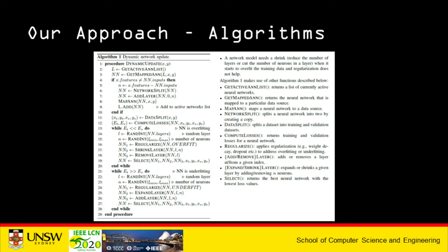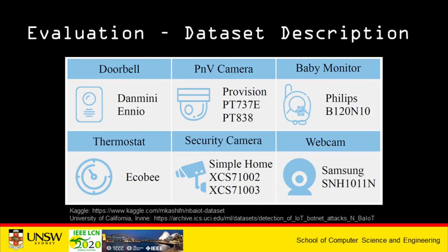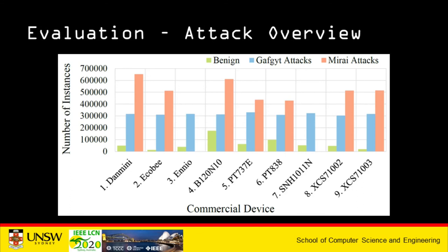We made use of a public dataset downloaded from the University of California Irvine's machine learning repository. We also reformatted the dataset so it can be more useful, and placed it on a public platform called Kaggle — you can download the entire dataset from our Kaggle homepage. This dataset contains IoT traffic data and various statistics from nine commercially available IoT devices: doorbells, PN cameras, baby monitors, thermostat, IPC, TV cameras, and webcam. This slide presents the number of instances available in the dataset for all nine devices.